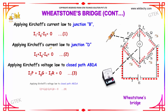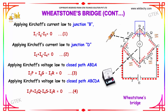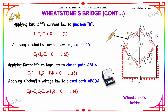Applying Kirchhoff's law at junction B: current I2 is coming in, so I1 going out minus IG minus I3 gives I1 minus IG minus I3 equal to 0 at junction B. Applying Kirchhoff's law at junction D: I2 plus IG minus I4 is equal to 0.